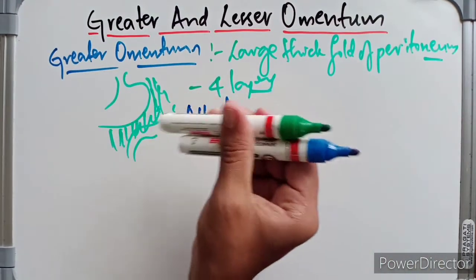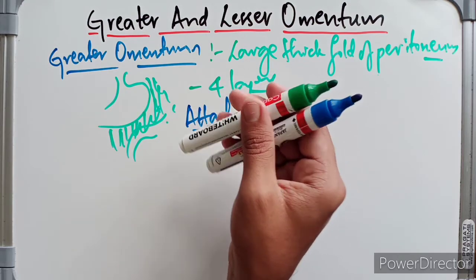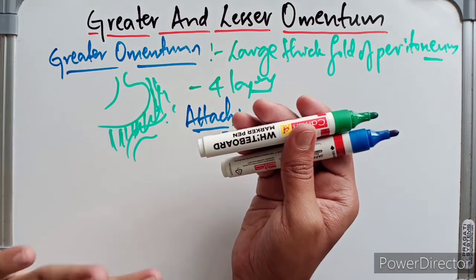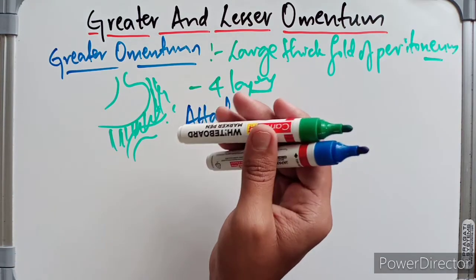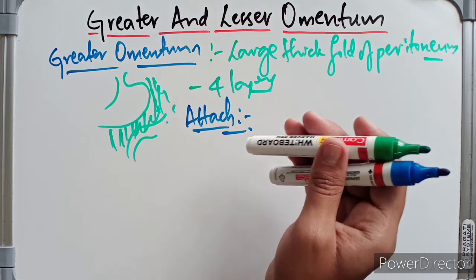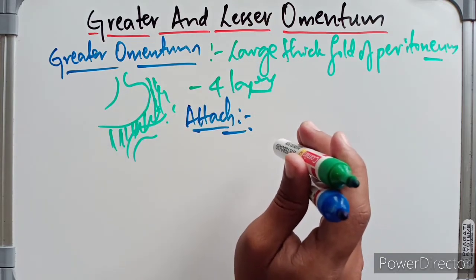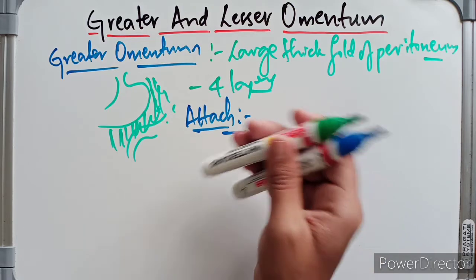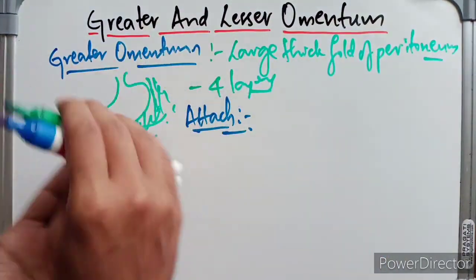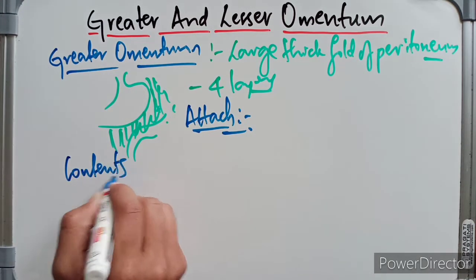Regarding the attachments of the greater omentum: the anterior two layers descend from the greater curvature of the stomach, as they are continuous with the peritoneum covering the anterior and posterior surface of the stomach. They then fold on themselves to form the posterior two layers, such that the first layer becomes the fourth layer and the second layer becomes the third layer. The posterior two layers ascend up to the transverse mesocolon, where the third and fourth layers fuse with the anterior layer of the transverse mesocolon.